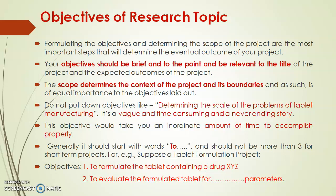Regarding the objectives of your research topic: objectives should be very brief, to the point, and relevant to the title of your project. Scope determines the context and boundaries of the project. Avoid vague objectives like 'determining the scale of problems of a tablet manufacturing' — these are time-consuming and never-ending. Objectives should start with an action word and not be more than a few. For example, if you are preparing a tablet formulation, your objective should be: 'To formulate a tablet containing drug XYZ and to evaluate the formulated tablet for its XYZ parameters.'